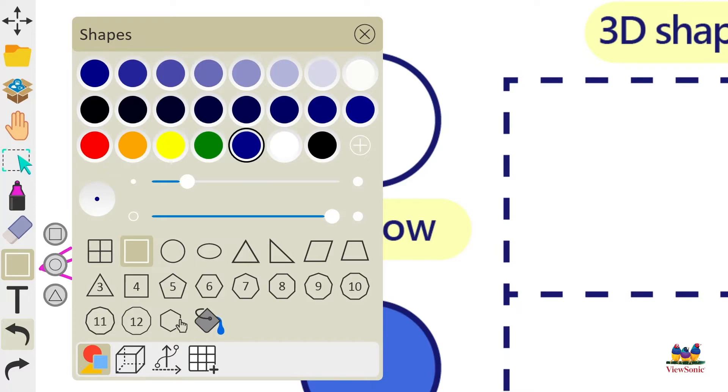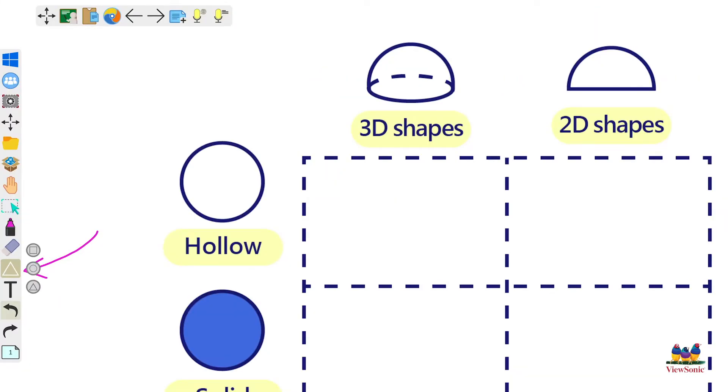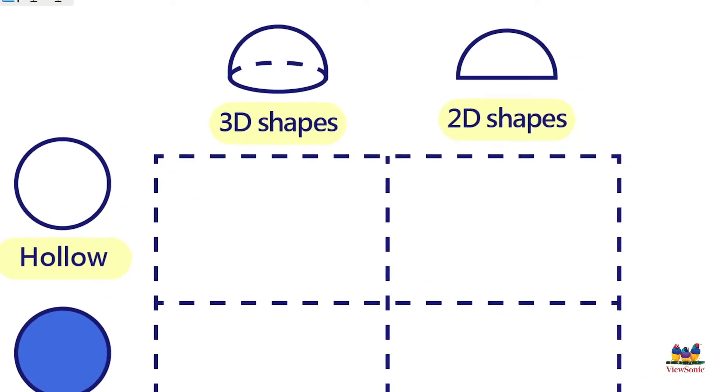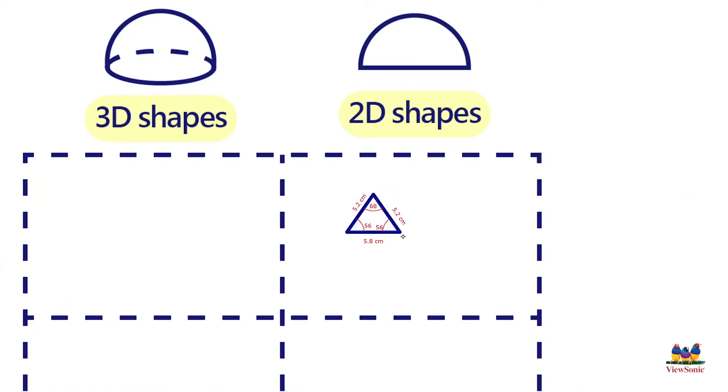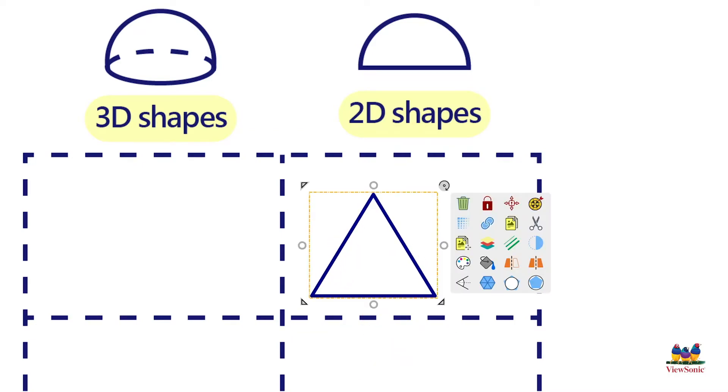Notice that the shape tool icon will change based on what shape I have activated. To draw the triangle we just need to touch and drag or click and drag on the canvas. The further you drag the bigger the shape, or the more narrow, or the smaller. When you let go, the shape is placed on the canvas.